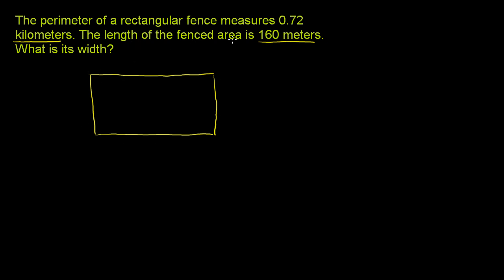Now the length of the fenced area is 160 meters. So let's call this the length. So this distance right here is 160 meters. Since it's a rectangle, that distance over there is also going to be 160 meters. And we need to figure out its width. They want us to figure out the width. The width is this distance right over here, which is also going to be this distance right over there.